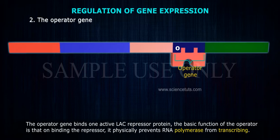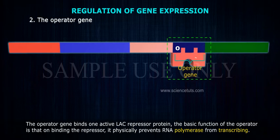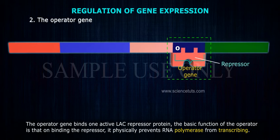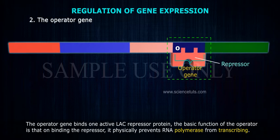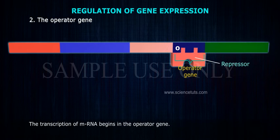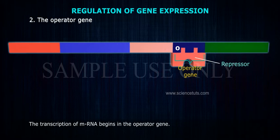The basic function of the operator is that on binding the repressor, it physically prevents RNA polymerase from transcribing. The transcription of mRNA begins in the operator gene.